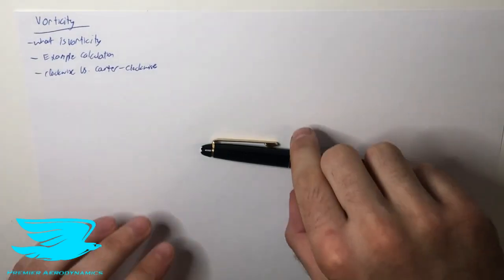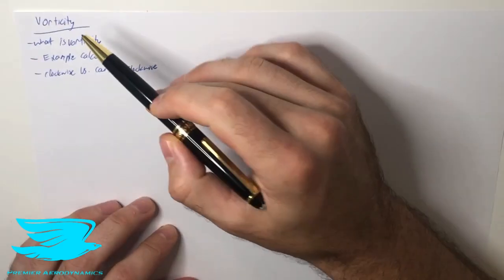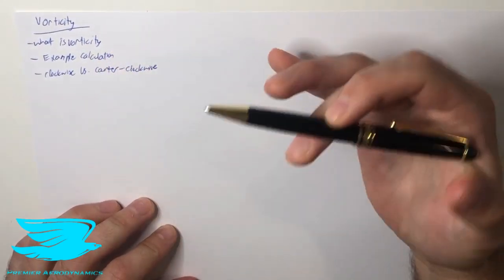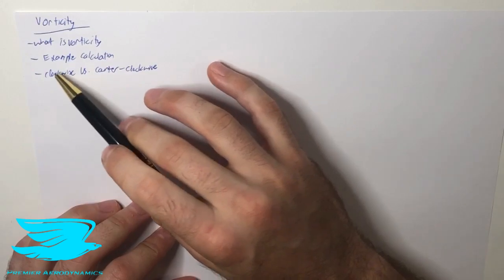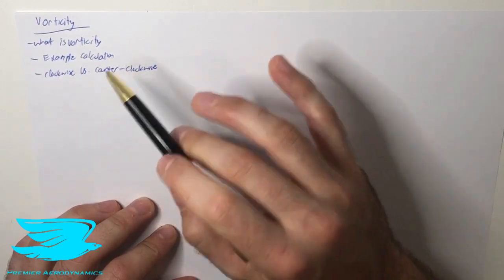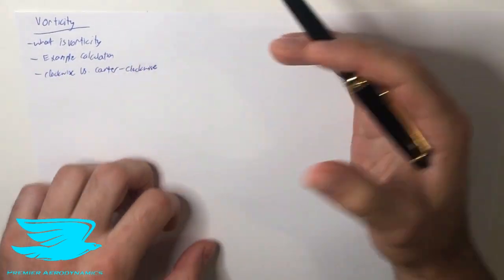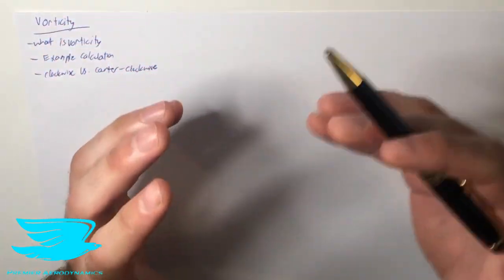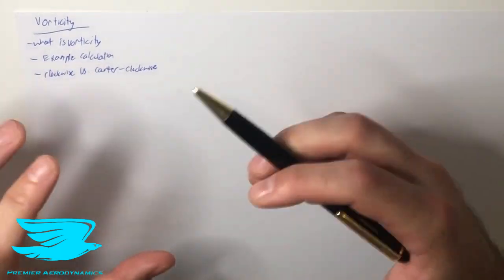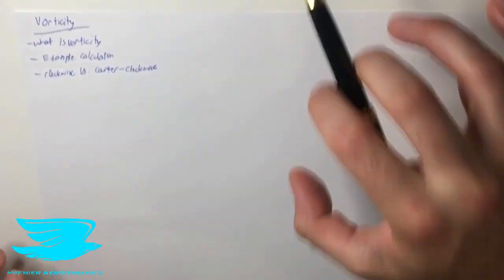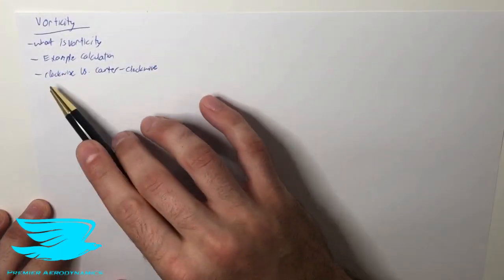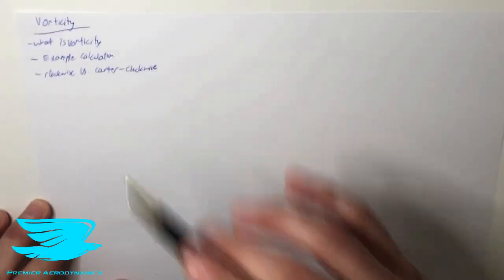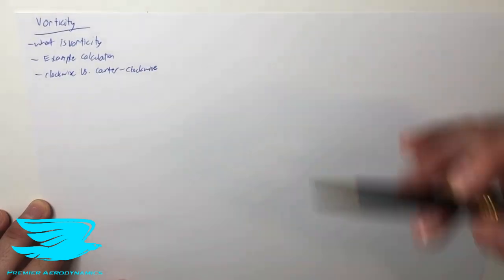What is up amigos? Today we're looking at vorticity. We're going to be covering what is vorticity, go through an example calculation with the equation and how this relates to a velocity field, and how to calculate the vorticity from a velocity field. And we're going to go through clockwise versus counterclockwise vorticity.